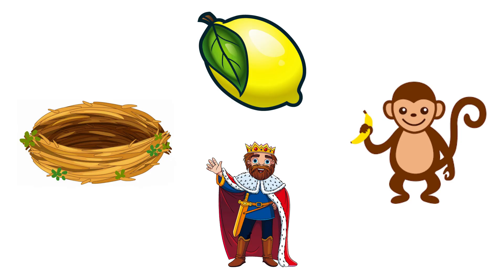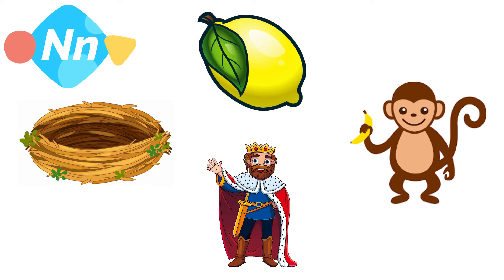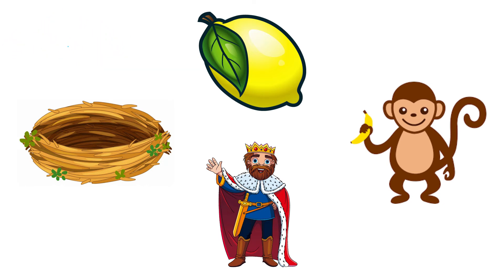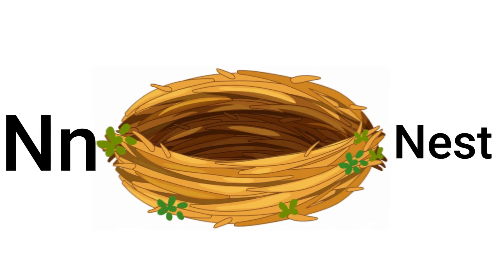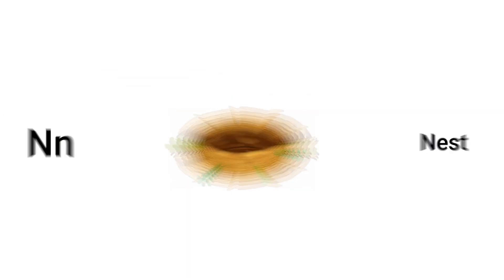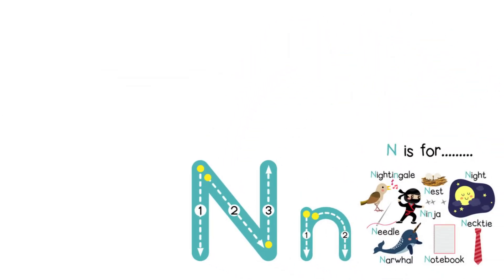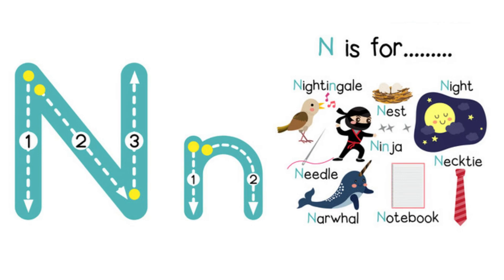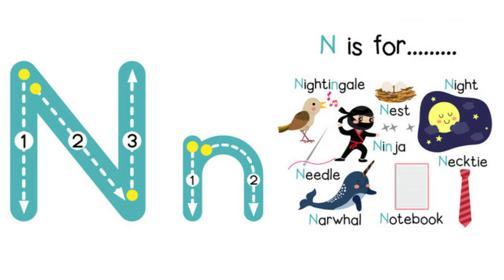You did excellent! Now let's have a look at the next letter. Can you find something here that starts with the letter N, making the N sound? Of course it is the nest. N is for nest. Take out your pointer finger and let's have a go at tracing the big N and the small N.